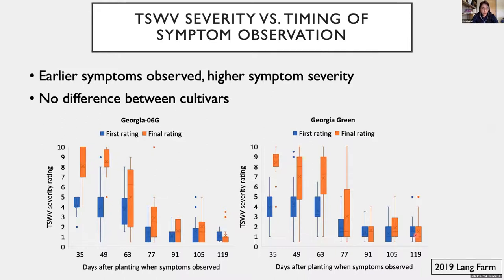TSWV symptom severity was found to be affected by the timing of symptom observation. For both first and final ratings, more severe symptoms were found in plants that expressed symptoms earlier in the season, and this pattern was consistent between cultivars.